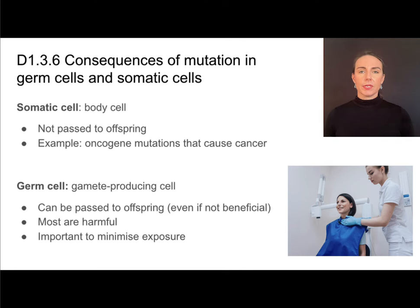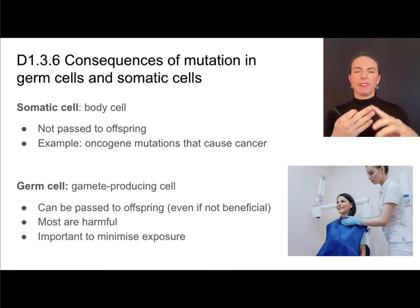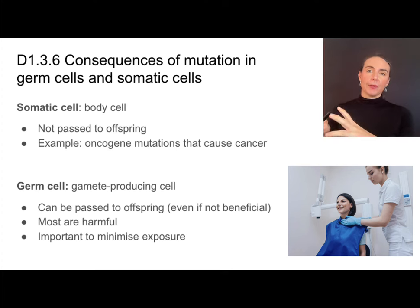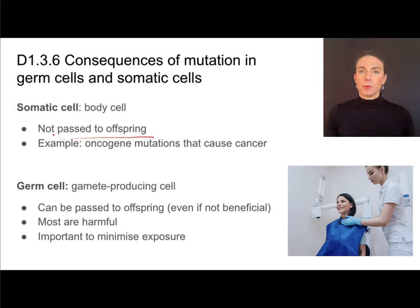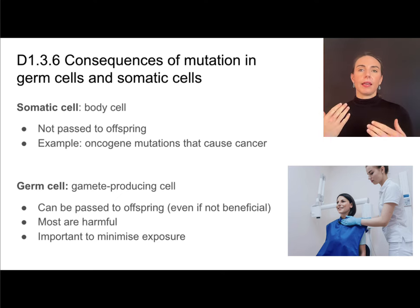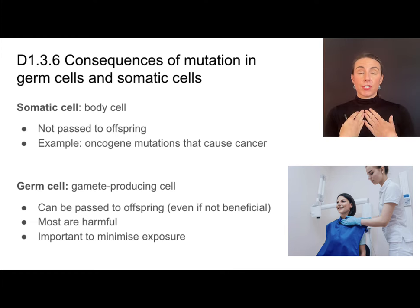There are lots of ways to categorize the cells in your body. One is to group them into somatic cells — like body cells, a skin cell, a muscle cell, a liver cell — or a germ cell. Germ cells are cells that produce gametes and are capable of undergoing meiosis. Mutations in somatic cells are not passed to offspring because those cells are not used to create gametes. For example, oncogene mutations that cause cancer: if I'm exposed to UV radiation and get a mutation in one of my skin cells, that may cause changes during my lifetime, but it would not be passed to my offspring.